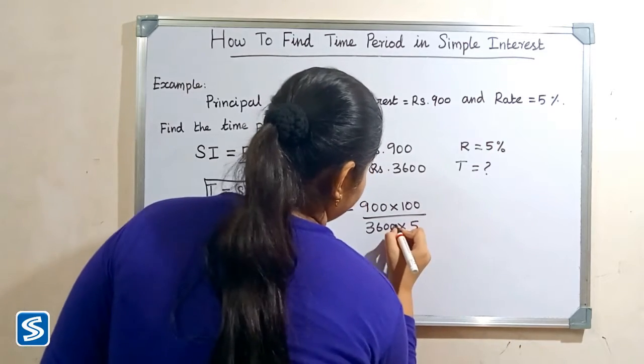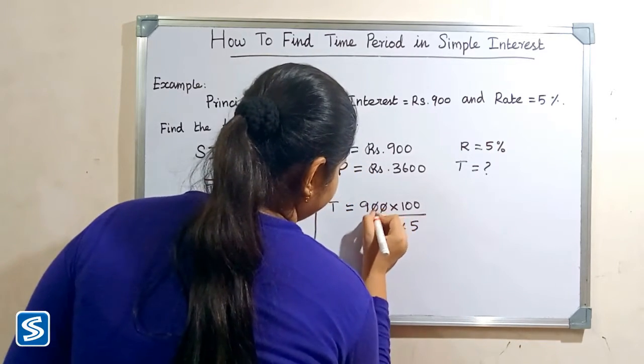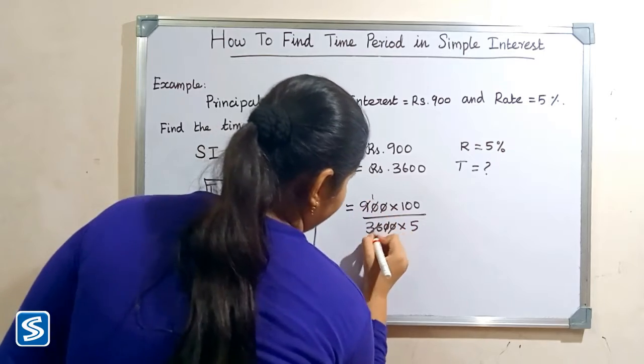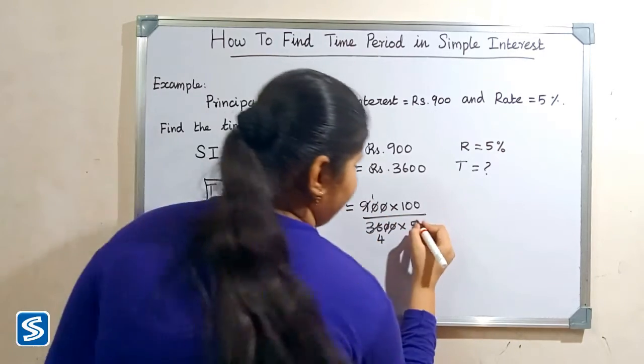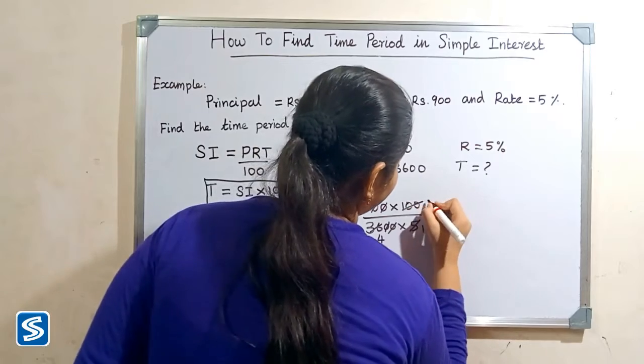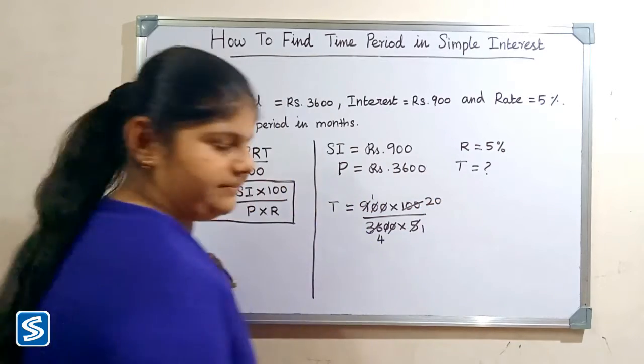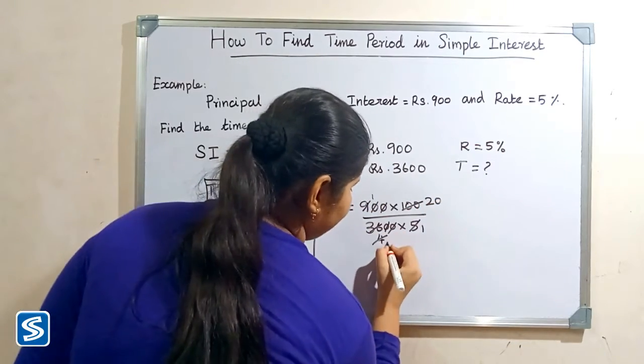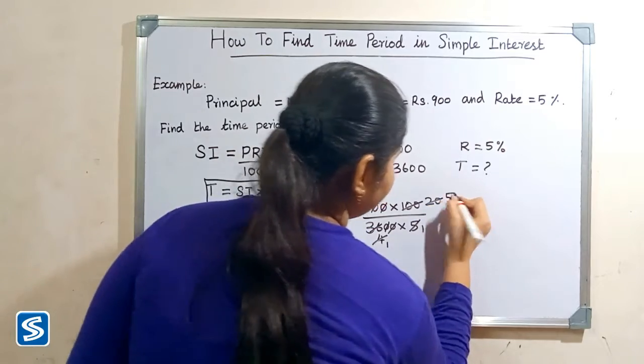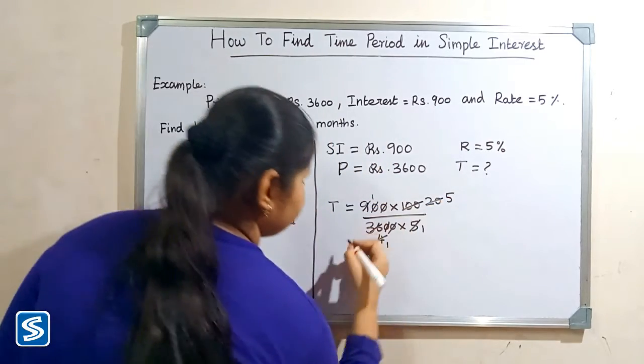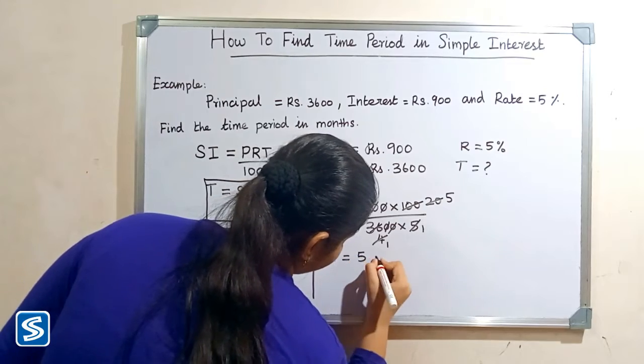So here 0 and 0 gets cancelled, 9 ones are 9, 9 fours are 36, 5 ones are 5, 5 twenties are 100, 4 ones are 4, 4 fives are 20. So time period is equal to 5 years.